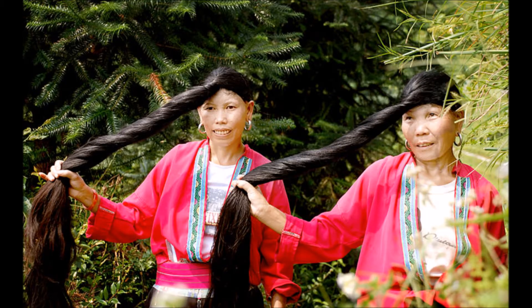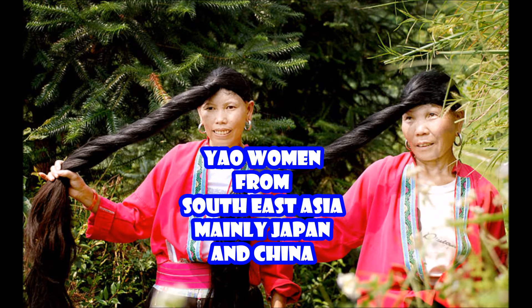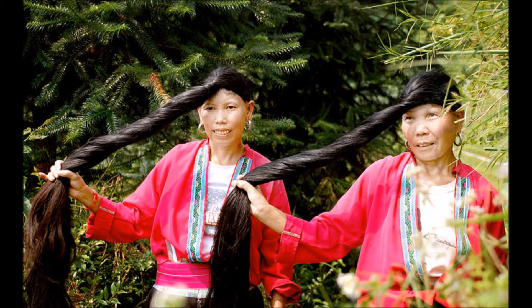So I'm going to give you a little bit about them. These are the Yao women, and they derive from Southeast Asia, Japan, and China. Here they are, and look how gorgeous their hair is. The lady on the right looks like she has some age on her, but you do not see a strand of gray hair.